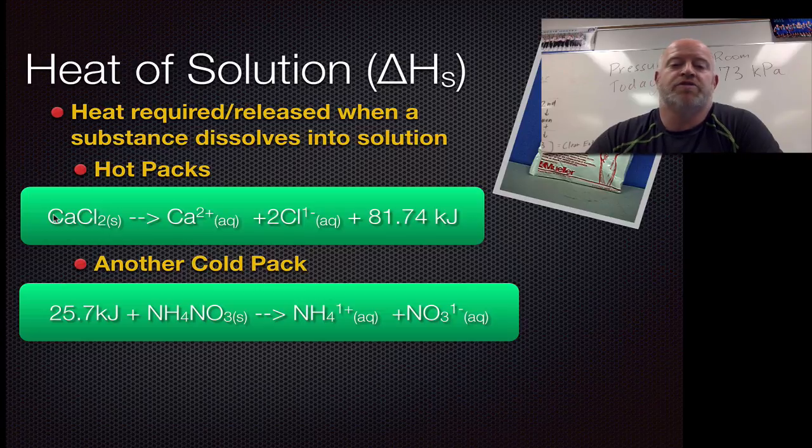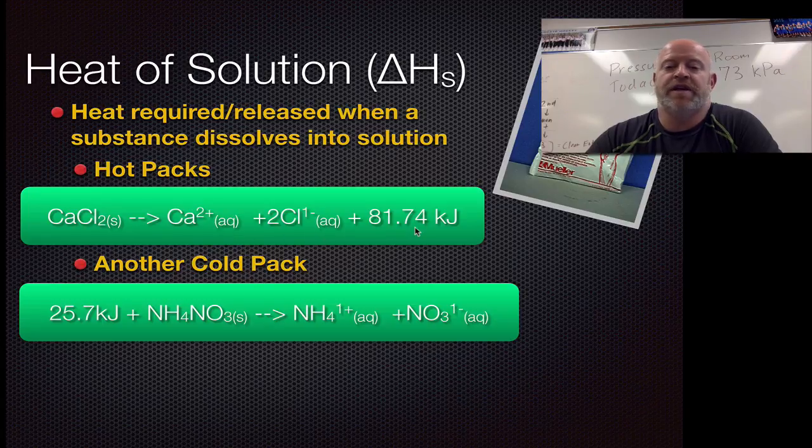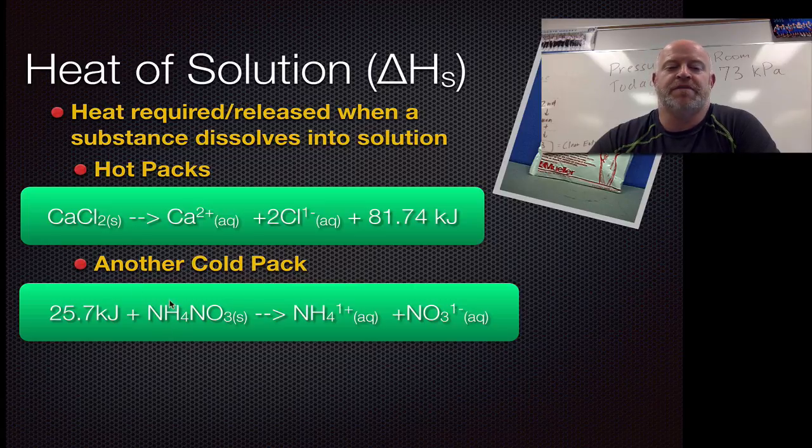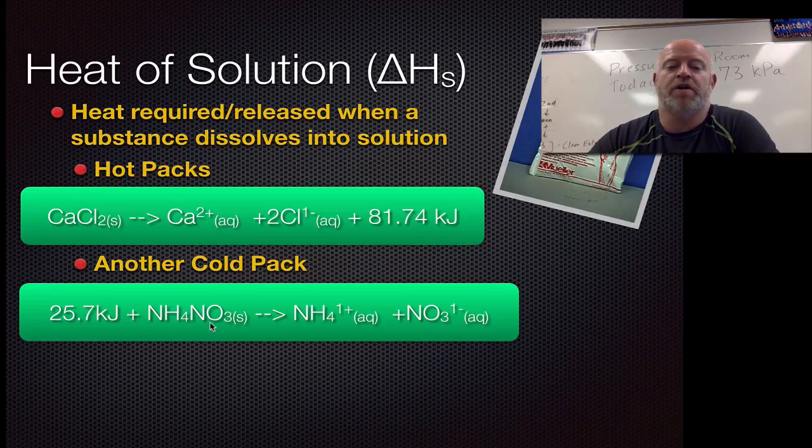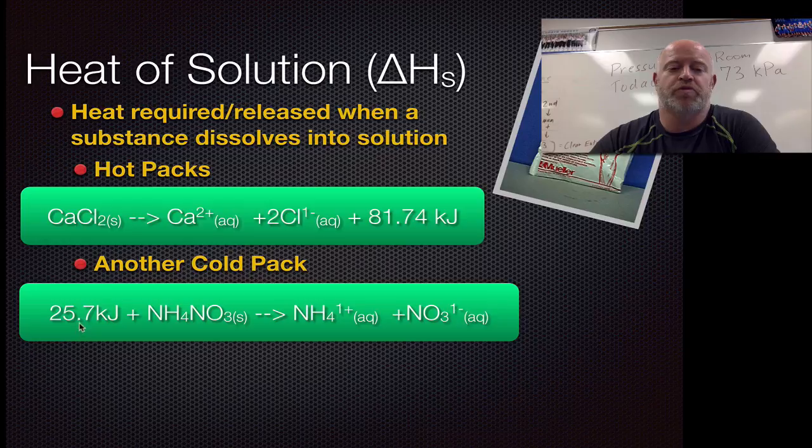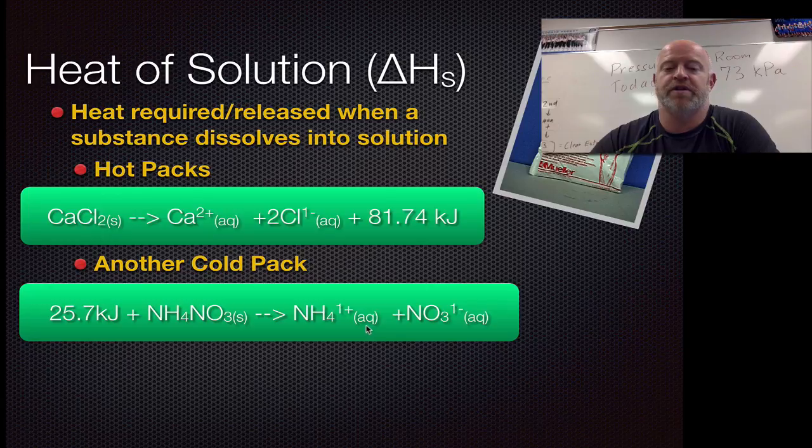Just like a chemical reaction, by dissolving this going from its solid state into its aqueous state, we get an energy change. Another way you can do a cold pack: we talked about barium hydroxide reacting with ammonium nitrate, but if you just take ammonium nitrate by itself and dissolve it into water, that process is actually endothermic. It absorbs 25.7 kilojoules per mole to make the ammonium ion and nitrate ion in solution.